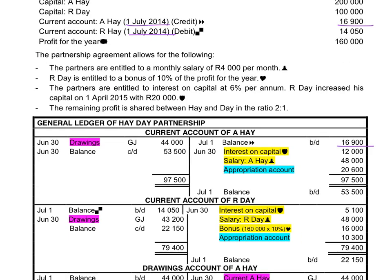The current account of R. Hay has a debit balance of $14,050. On the debit side we will record the balance. The reason why he has a debit balance is because he took too much money at the end of the previous year.